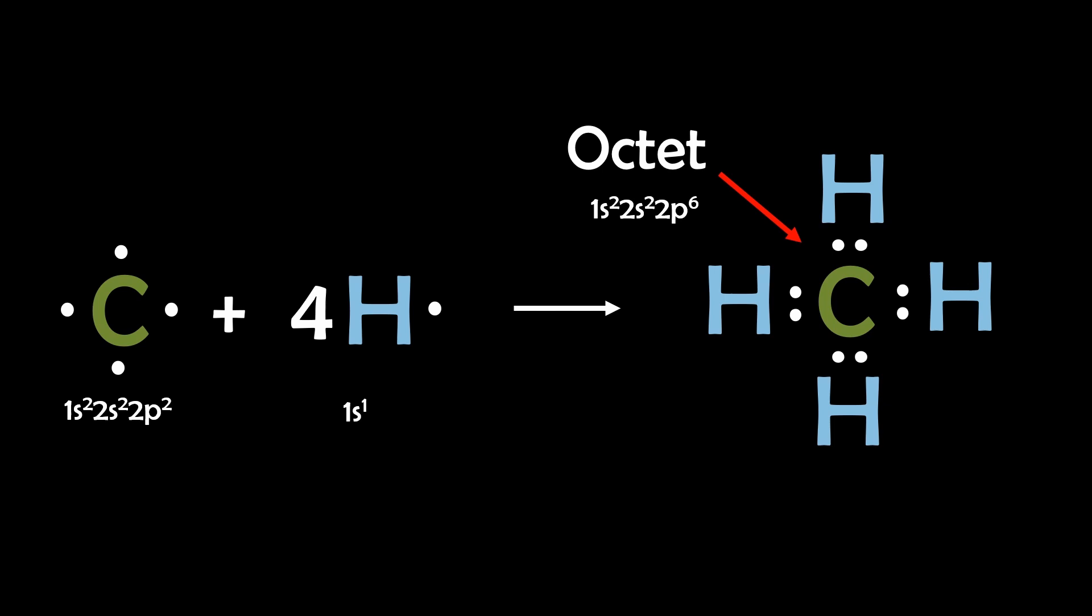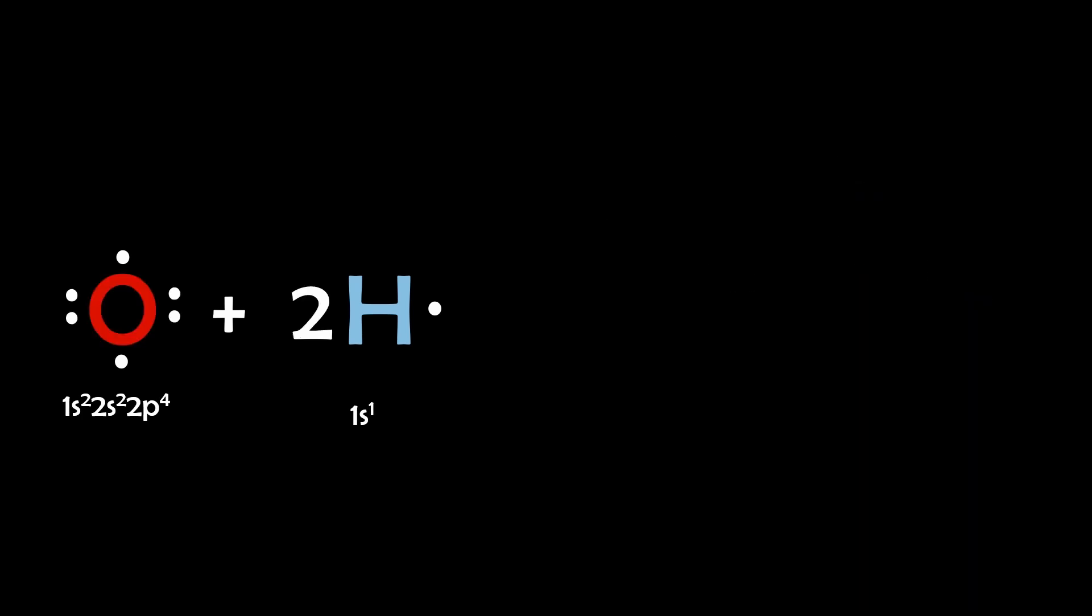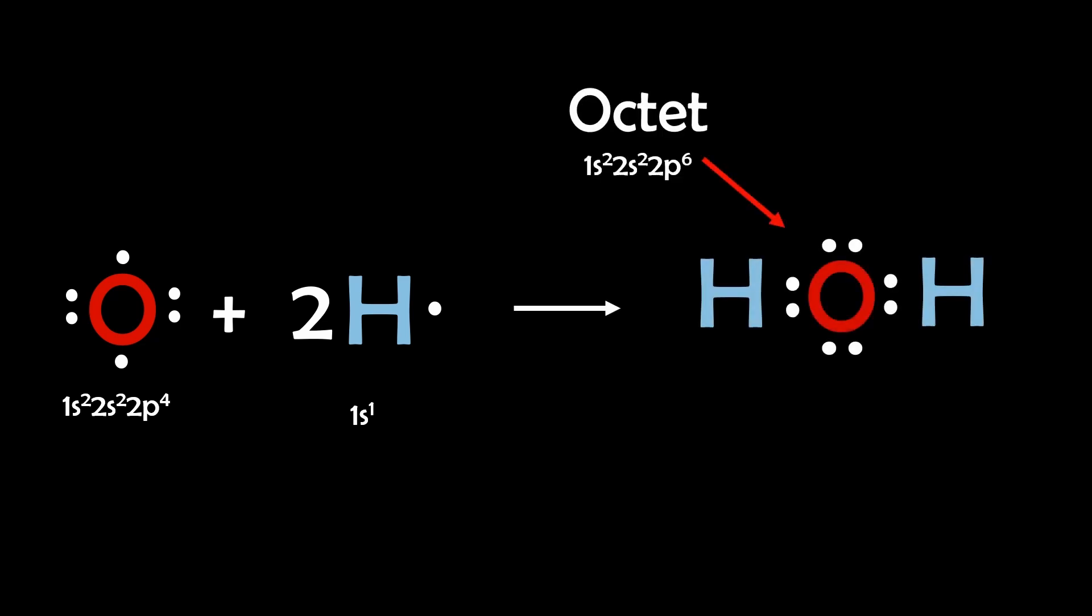And remember that a covalent bond is the sharing of electrons. The oxygen atom with 6 valence electrons forms 2 covalent bonds with 2 lone pairs to achieve an octet.